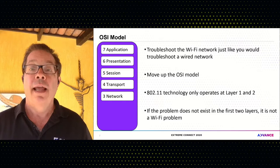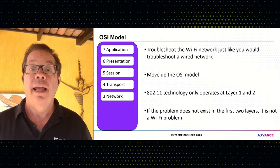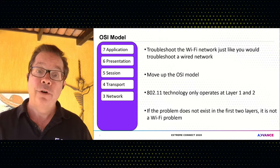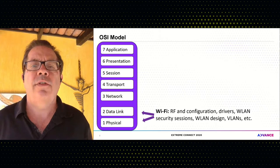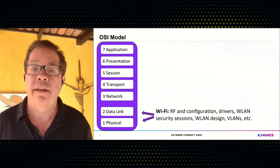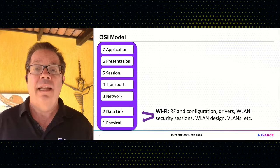Wi-Fi always gets blamed for problems happening at higher layers. That's why I like to troubleshoot the OSI model — especially with Wi-Fi — because if I can prove it's not layer one or layer two, I can start looking at the higher layers. Wi-Fi operates at layer one — the physical layer — and layer two, the data link layer, more specifically the MAC sublayer of the data link layer.